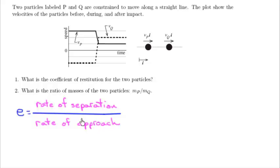divided by a rate of approach. So in this problem, the rate of separation would be vq2 minus vp2, right? That's how much faster vq is moving than vp after they hit. And then the rate of approach would be vp1 minus vq1. And if I were to stick numbers in here, vq2 minus vp2, that's the difference right here. That looks like to be 1.